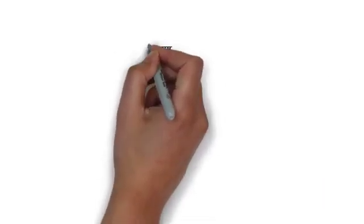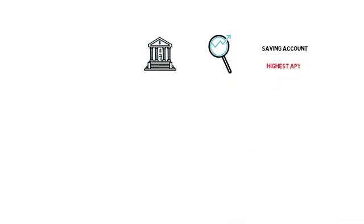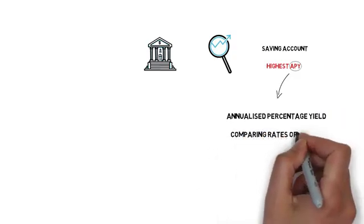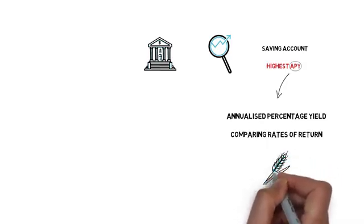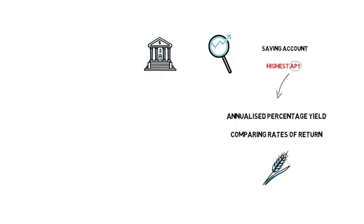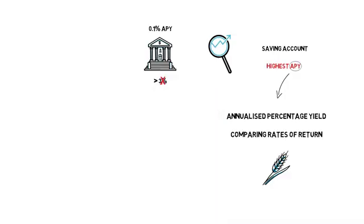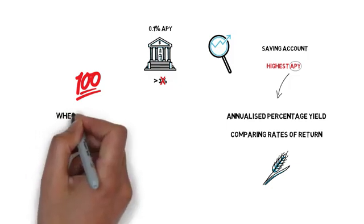To compare it to traditional finance, you can imagine people trying to find the best savings account with the highest APY. APY stands for annualized percentage yield, and it's a common way of comparing rates of return on your money across different products. It's also a common way of expressing the returns of different yield farming strategies. Traditional savings accounts typically have around 0.1% APY, and anything above 3% is pretty much unheard of these days. When it comes to yield farming, the returns can be pretty insane, with some strategies bringing as much as 100% APY.